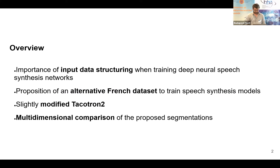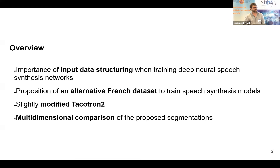Here is a brief overview of this presentation. I'd like to start by introducing why input data structuring is so important when training text-to-speech deep neural networks. This led us to consider that some datasets used in the literature may not be well suited for this application, and we propose an alternative French dataset that may benefit TTS network training. We use this dataset to train a slightly modified TACOTRON2 network, and I will discuss the additions we made to overcome difficulties, and a multidimensional analysis of the resulting synthesis.